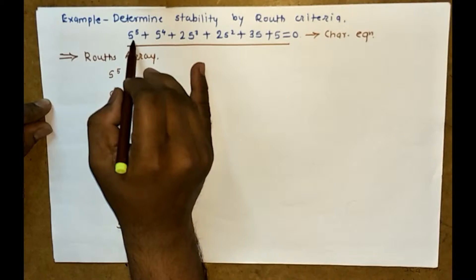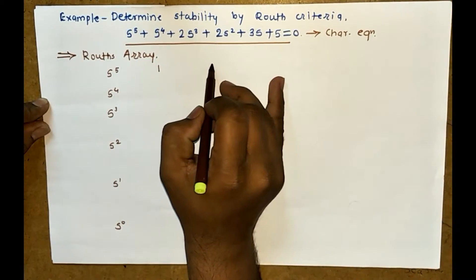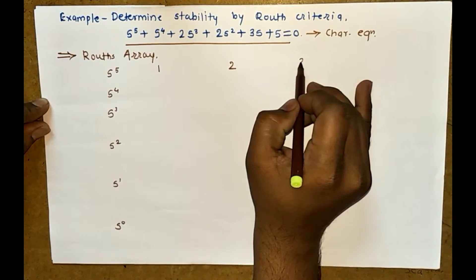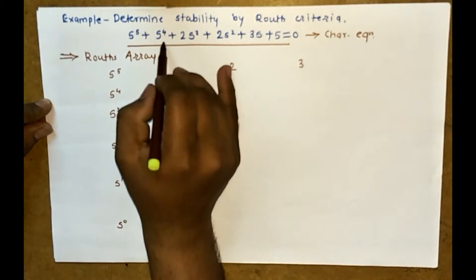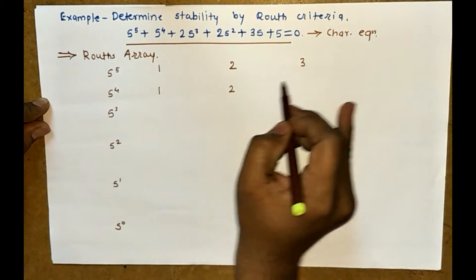The coefficient of s^5 is 1, skip one term and coefficient of s^3 is 2, skip one term and next is 3. Coefficient of s^4 is 1, skip one term to get 2, skip one term to get 5.